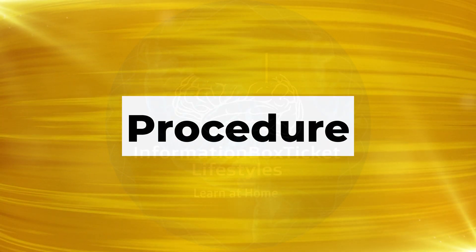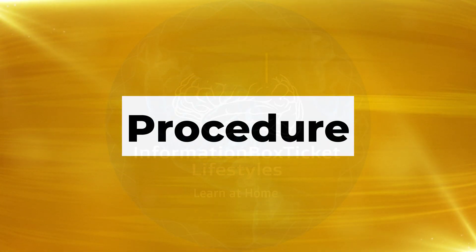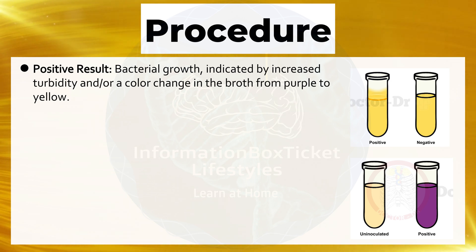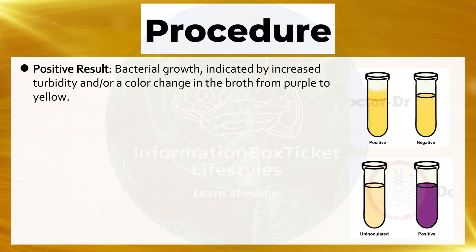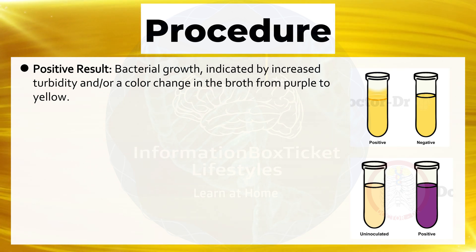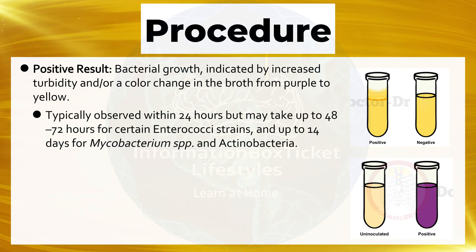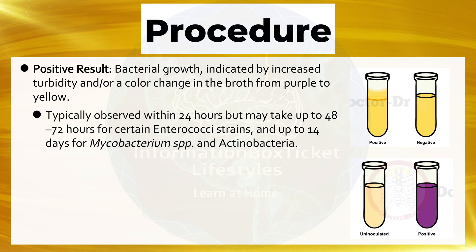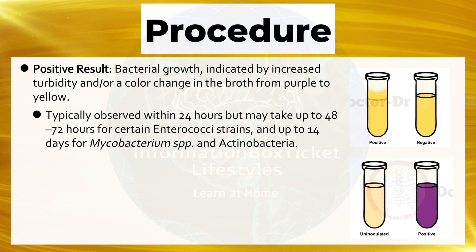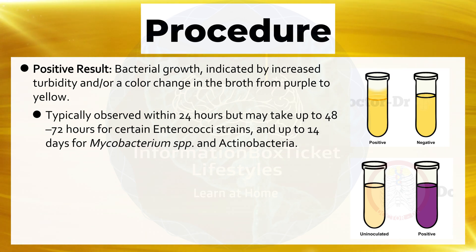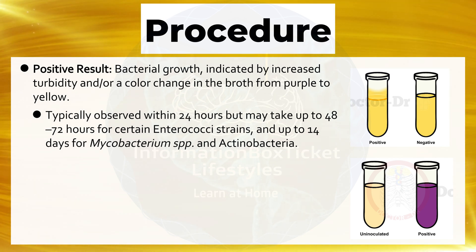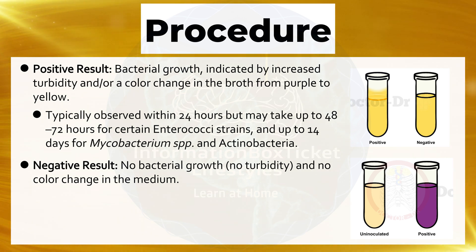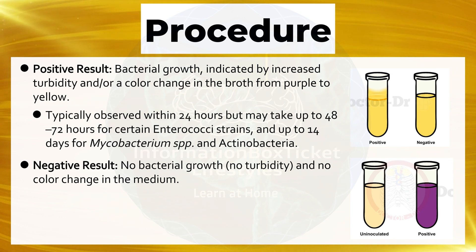Result and Interpretation of Salt Tolerance Test: Positive result — bacterial growth indicated by increased turbidity and/or a color change in the broth from purple to yellow, typically observed within 24 hours, but may take up to 48–72 hours for certain Enterococci strains and up to 14 days for Mycobacterium species and Actinobacteria. Negative result — no bacterial growth, no turbidity, and no color change in the medium.